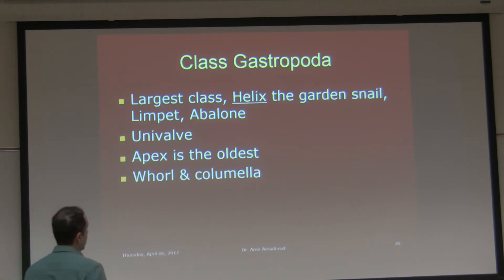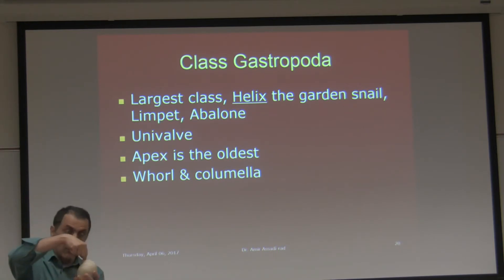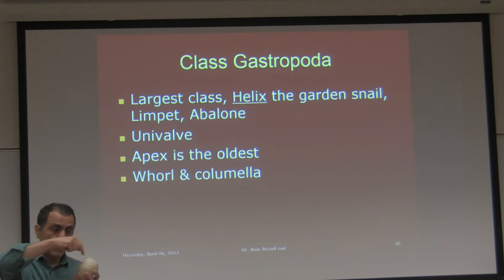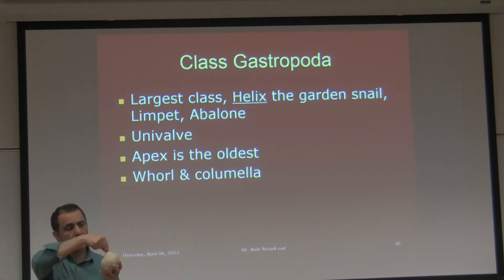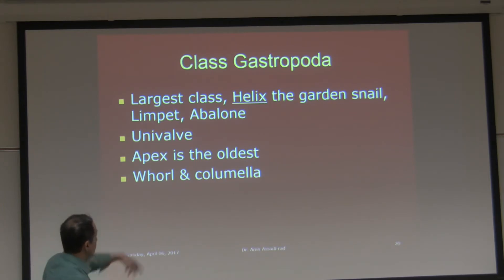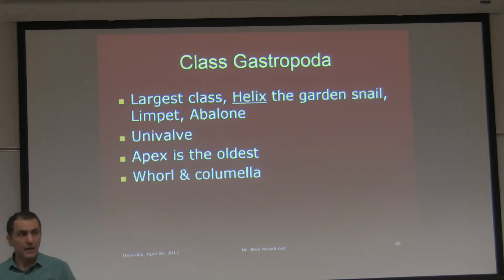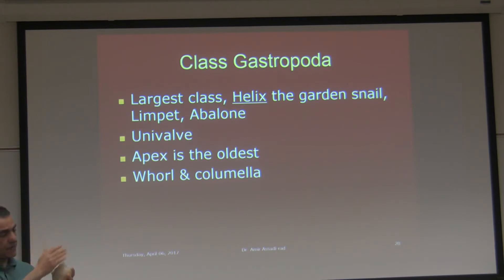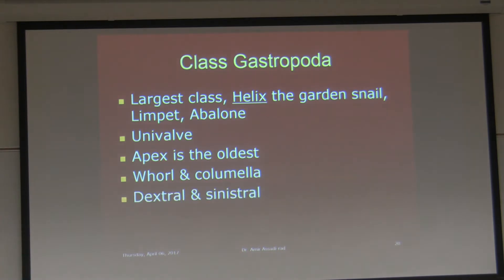A whorl is one complete circle. If I put a piece of tape during the exam and I have a complete circle, I'm looking for the term 'whorl.' And columella — if you cut the shell in half, there is a structure that stands right in the middle; that's the columella. I have some shells cut in the lab if you want me to show you.